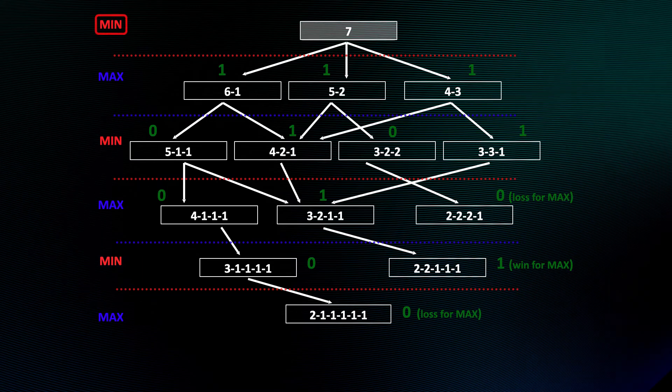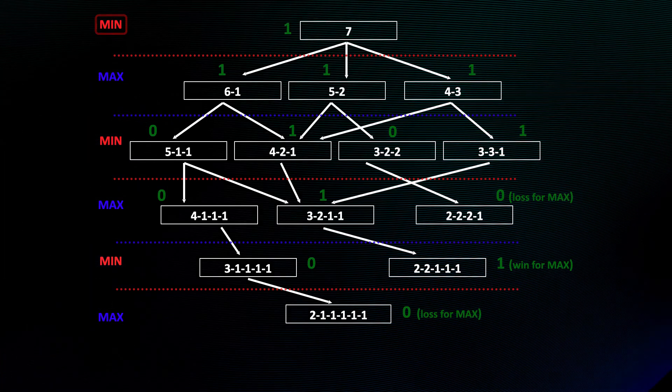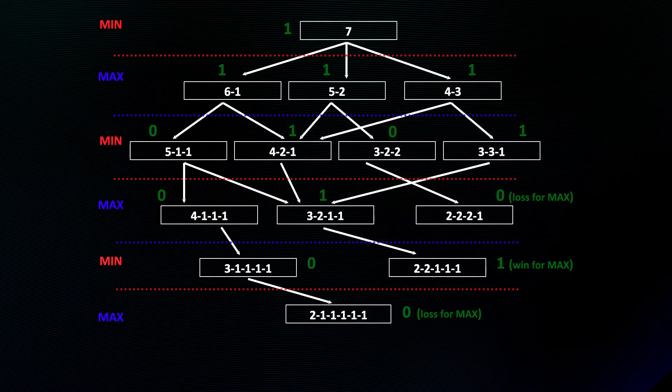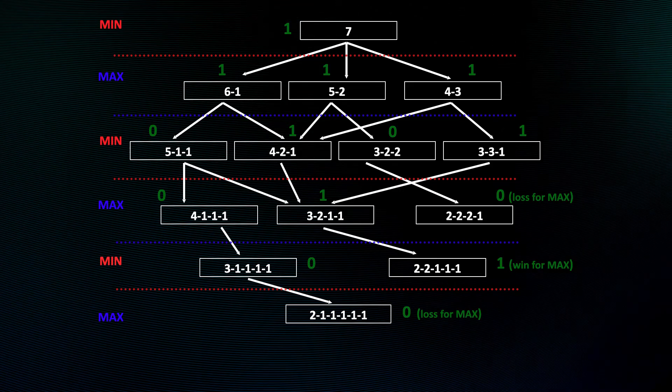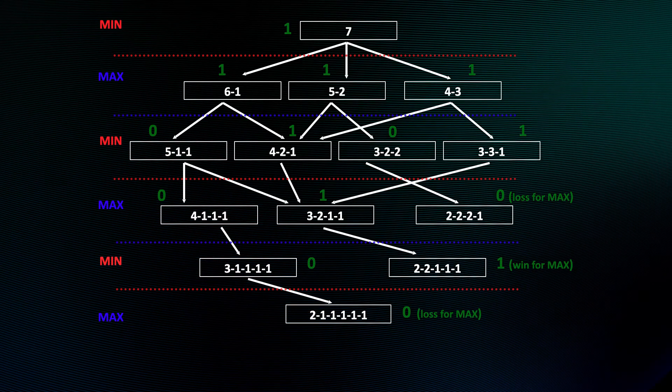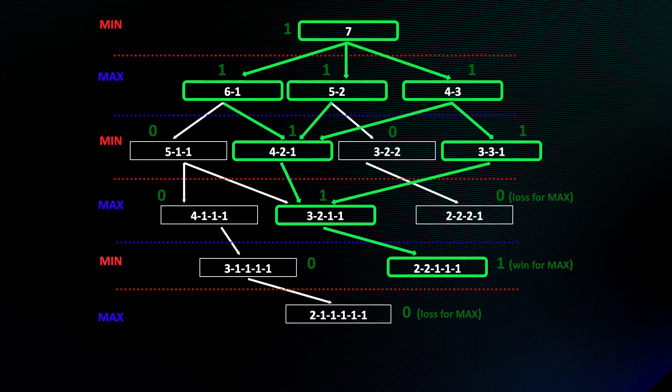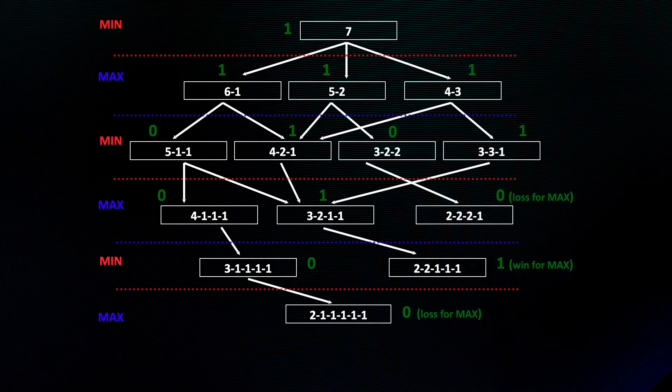At the top, Min has to pick a one on the first move. That tells us the game is a loss for the first player. The Minimax algorithm has found for us the game theoretic value.